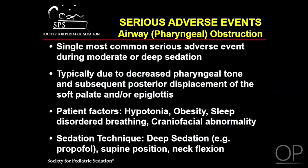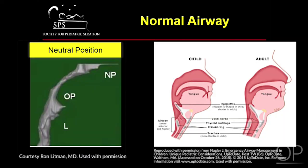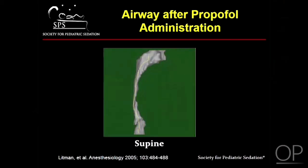Certain circumstances, such as deep sedation, supine positioning, and neck flexion, can also enhance the likelihood of airway obstruction. To demonstrate, consider this MRI image and drawing representing the anatomy of a normal airway. Now consider this airway MRI taken after propofol administration. Note the airway narrowing that has occurred due to muscular relaxation generated by pharmacologically induced sedation and positioning.